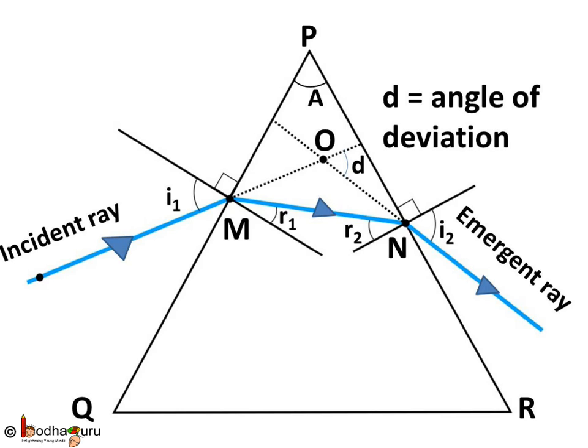Now, if we extend the incident ray and the emergent ray, then they meet at a point, say point O. At this point, the angle between the two rays, that is incident ray and emergent ray, is called angle of deviation.